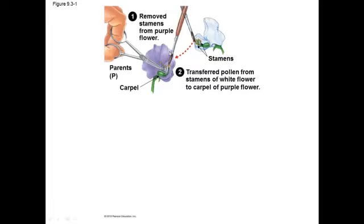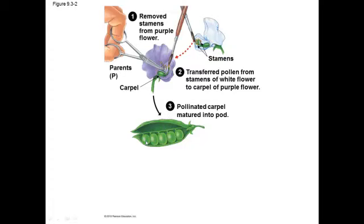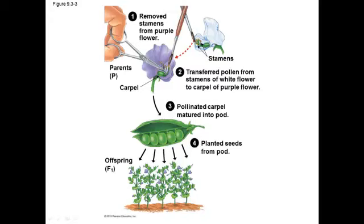Say this plant is true-breeding for all dominant characteristics — purple flowers — and another plant is true-breeding but has white flowers as the one difference. Every other trait about these two plants is the same; just the flower color differs. Mendel crossed purple and white, collected the mature seed pods, planted them, and let them germinate. He tracked the traits and characteristics of the resulting plants. These parents are the P generation, and the resulting plants form the F1 generation.